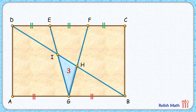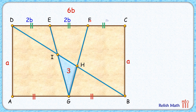Let's assume the breadth of the rectangle is 'a' centimeters. To avoid fractional parts, we'll assume the length of the rectangle is 6b, so each trisection segment on top will be 2b, and the bottom bisection segments AG and GB will each be 3b.